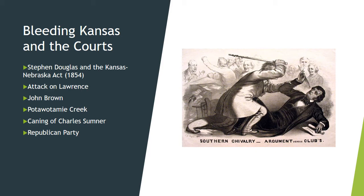Another development was the disintegration of the Whig Party and the emergence of the Republican Party, which was opposed to slavery. The Democratic Party at this point stood firm on a pro-slavery agenda, so the parties that emerged were sectional rather than national. The Democratic Party was largely a Southern party, and the Republican Party was a Northern party. The Republican Party had an official anti-slavery message — or at least a message opposing the introduction of slavery into the new territories — and was pretty much confined to the North.